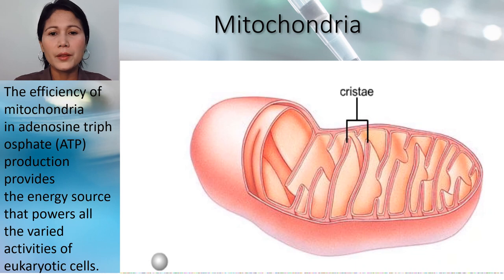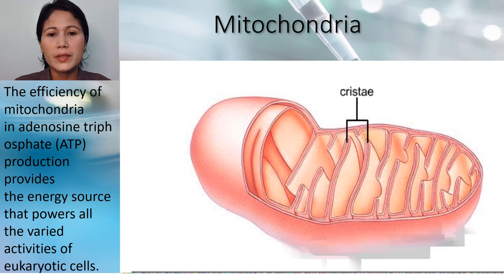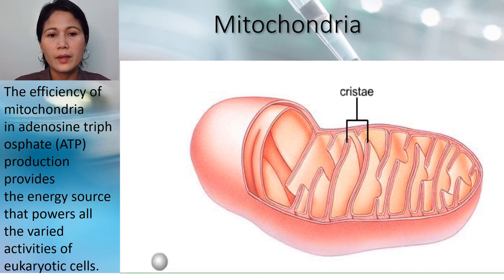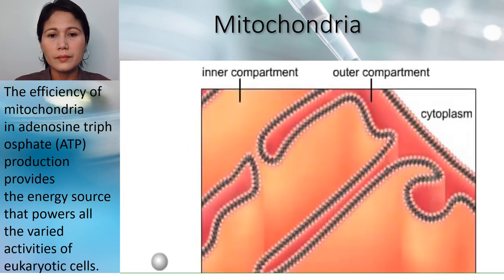Each mitochondrion has a double membrane system. The outer membrane faces the cytoplasm while the inner membrane folds back on itself to form the cristae. The membrane system forms two distinct compartments within the mitochondrion.